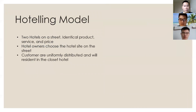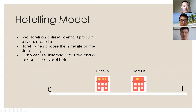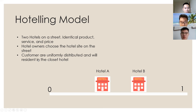This is our topic for today: the Hoteling model. As you can see, there are two hotels on the street. They are identical hotels — they offer identical port-out service and sell at the same price. Hotel owners want to choose their hotel site on the street. Customers are uniformly distributed and will go to the closest hotel. So the two hotels are competing with each other, fighting to pick the best locations to draw more customers and hence gain more revenue as their payoff.